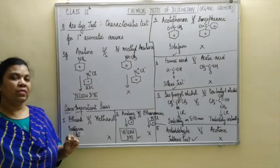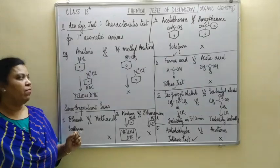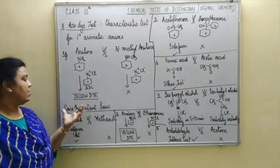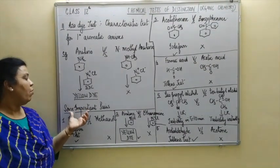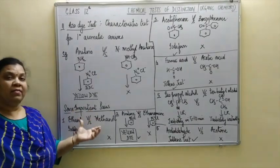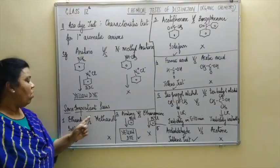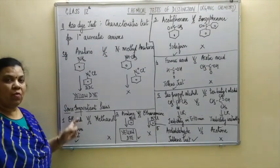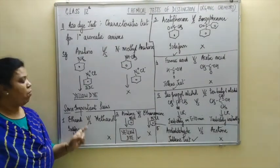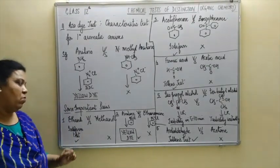The azo dye test is used to distinguish between primary aromatic amines versus primary aliphatic amines. Now, after studying all the chemical tests, let us practice a few pairs commonly seen in exams. The first pair is ethanol versus methanol. Ethanol will give the iodoform test — on addition of NaOH and I2, you will get a yellow precipitate of iodoform in case of ethanol, but no such observation in case of methanol.